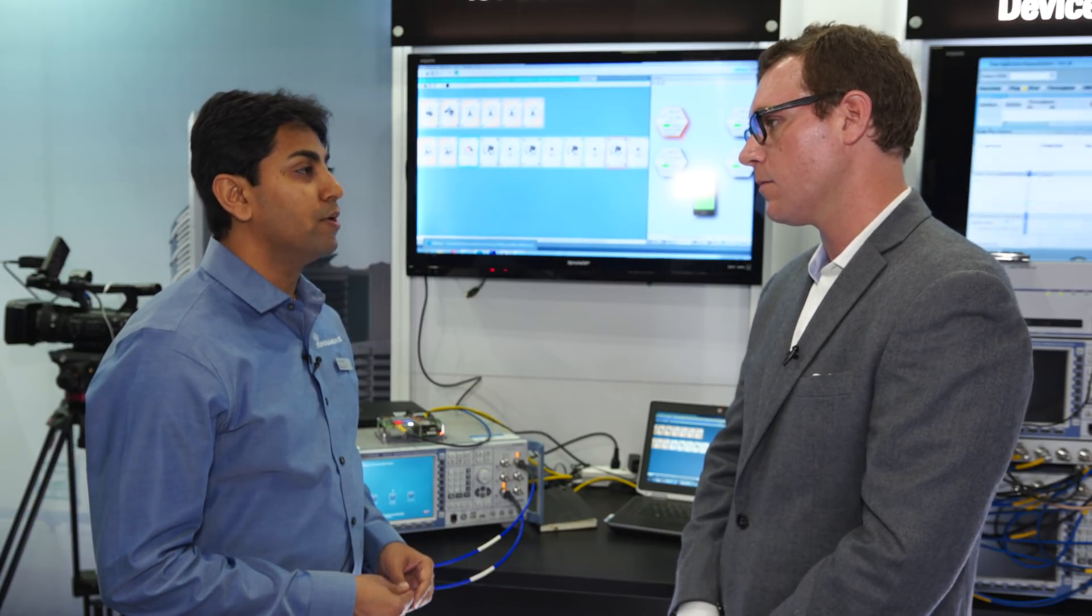For IoT, primarily, there are two main use cases that we see. One is the cellular IoT part, which is the low power wide area network or LPWAN, which is driven by use cases from NB-IoT and EMTC.